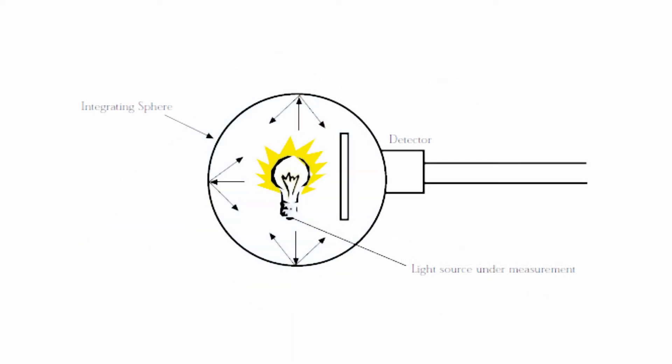There are ports on the sphere for instruments, samples, and light sources. The light source is placed in the sphere and a measurement is taken with either a photometer for photometric measurements or a radiometer for radiometric measurements. The sphere would initially be calibrated with a standard light source, so the reading from the photometer or radiometer indicates the total light power.